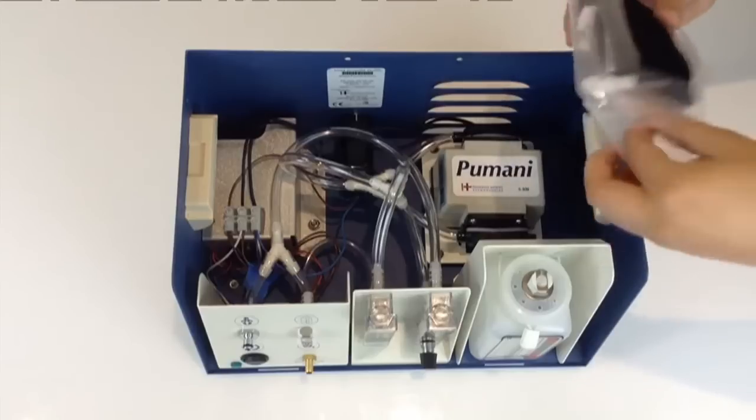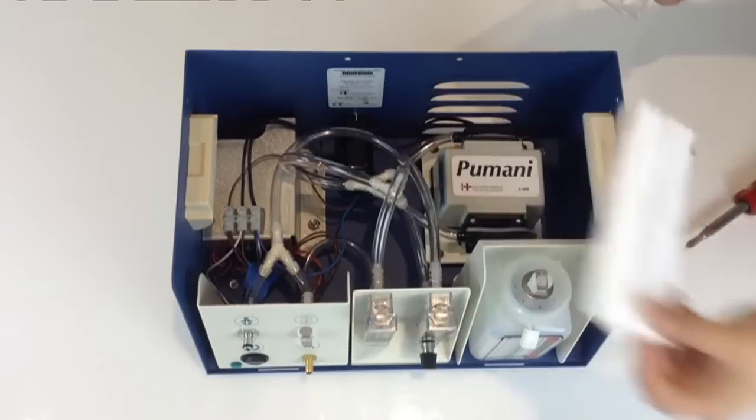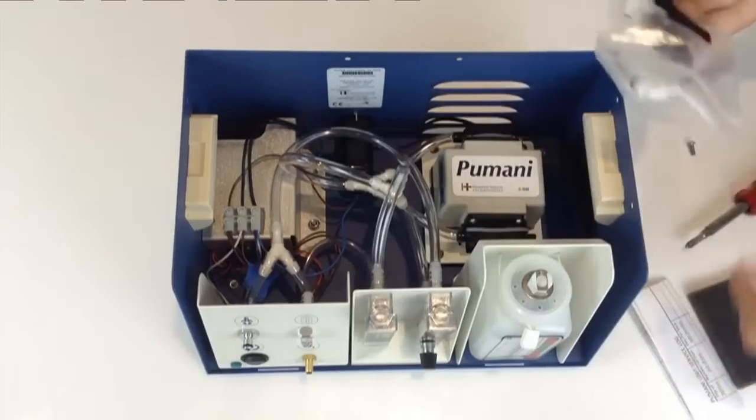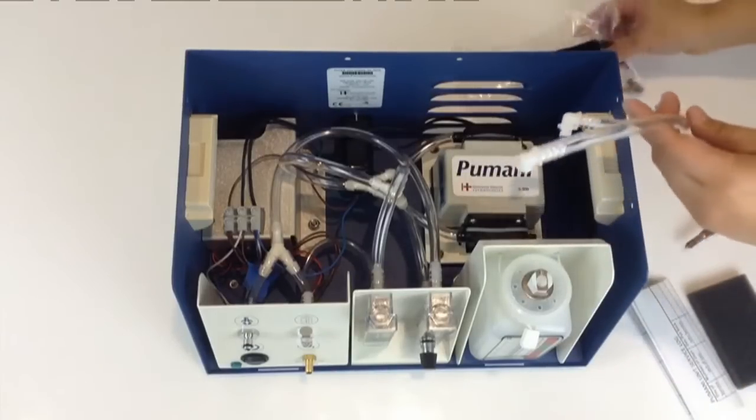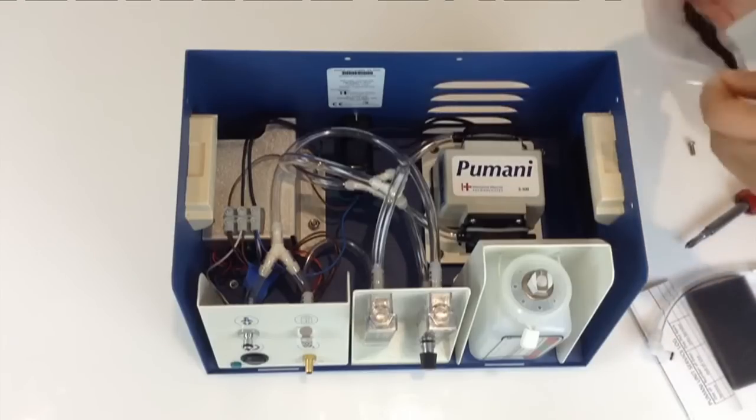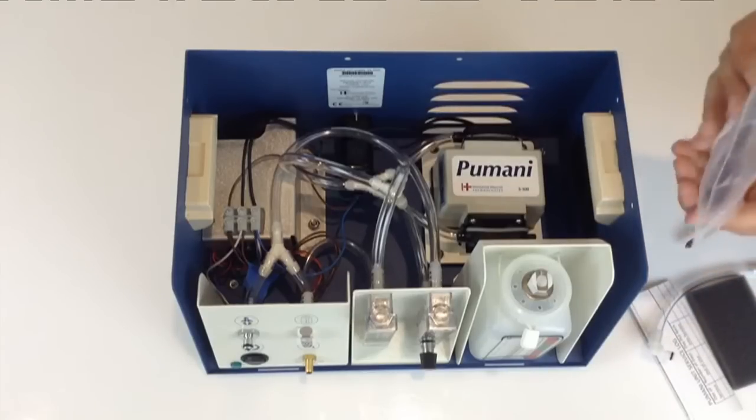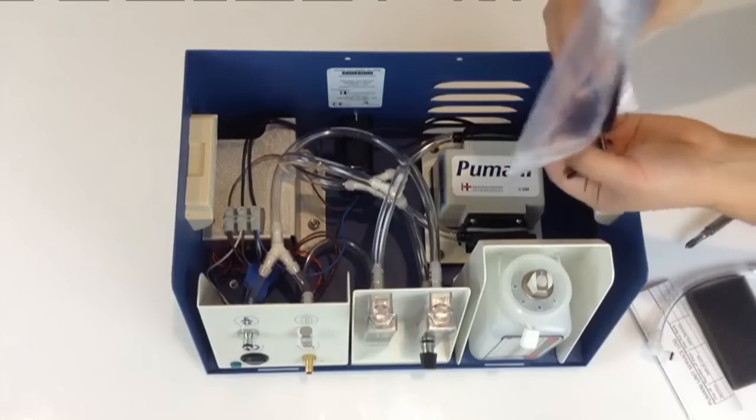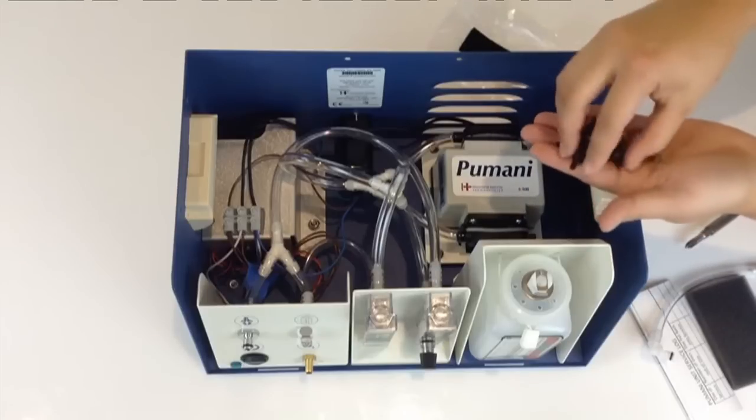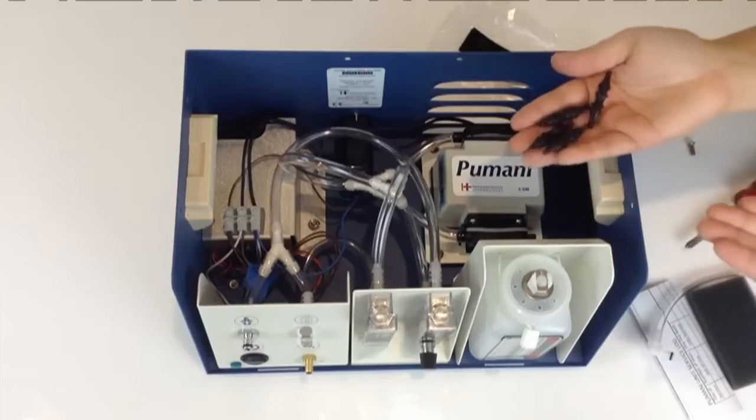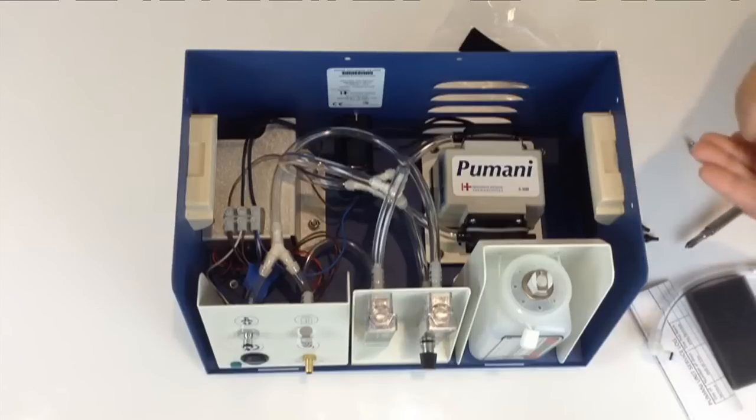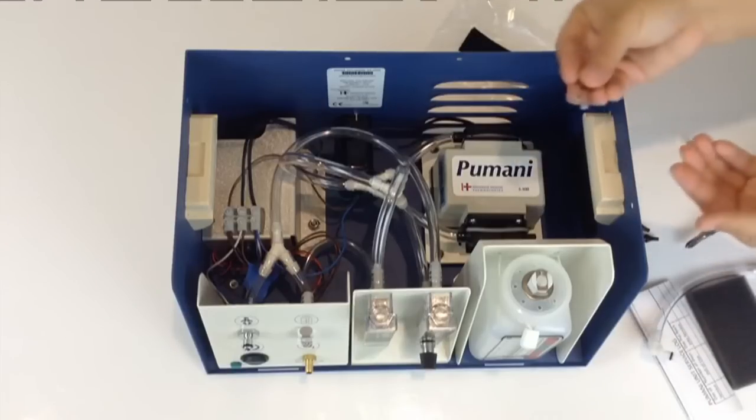The kit should contain a service log, a foam filter that goes under the pump, a bottle tube, a tube, and four rubber pump feet, two spare Phillips head screws, and two rubber pump feet.